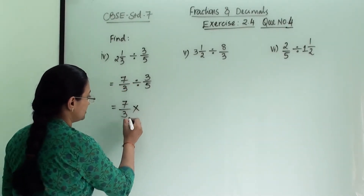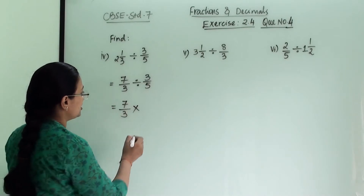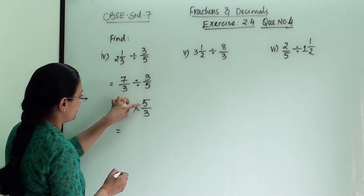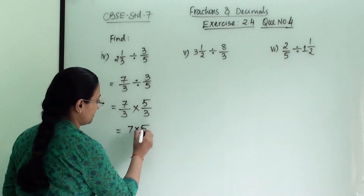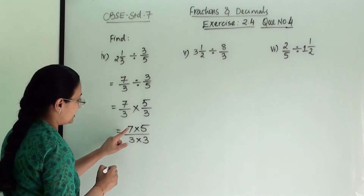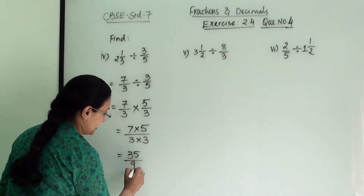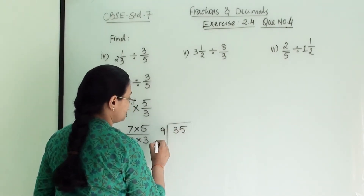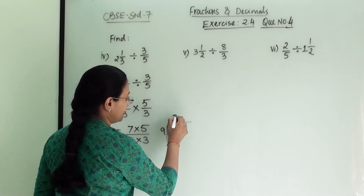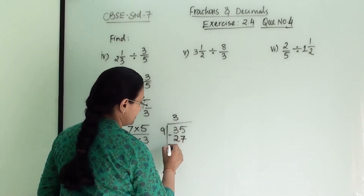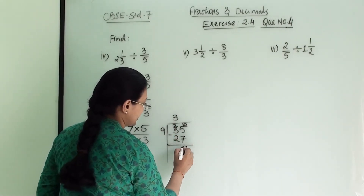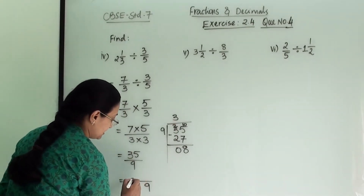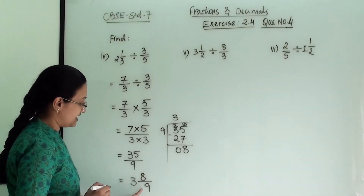We convert the division sign into multiplication and take the reciprocal of 3 by 5, which is 5 by 3. So the multiplication is 7 into 5 in division with 3 into 3. We cannot reduce anything here, so we get 35 divided by 9. This is an improper fraction, so we convert it to a mixed fraction. 9 threes are 27, giving remainder 8. So the answer is 3 and 8 by 9.